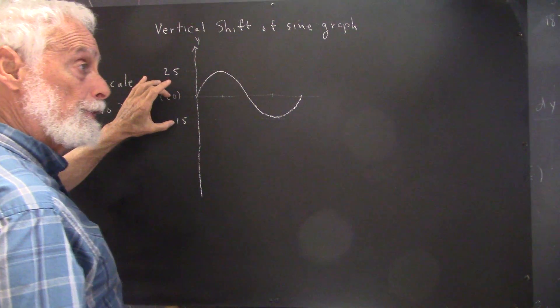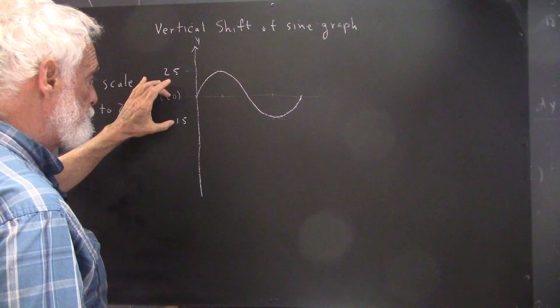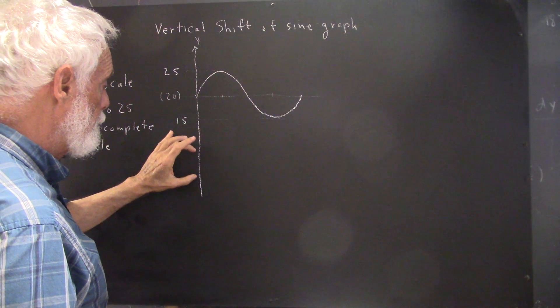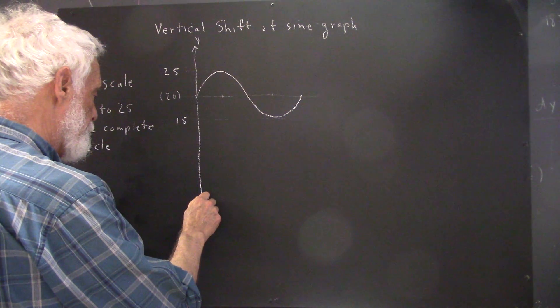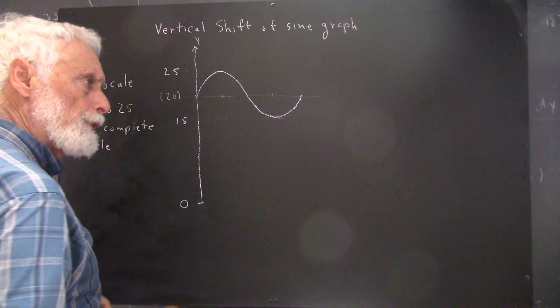Okay. This distance is five units. If I go down one, two, three times this distance, that puts me about here. That's where y equals zero would be.